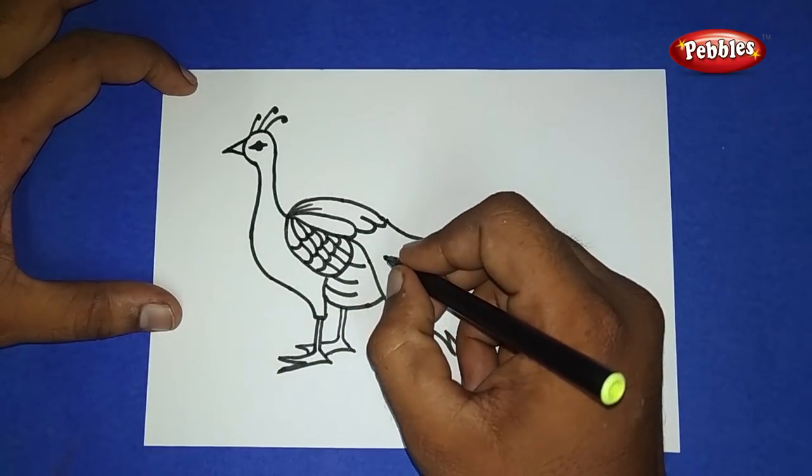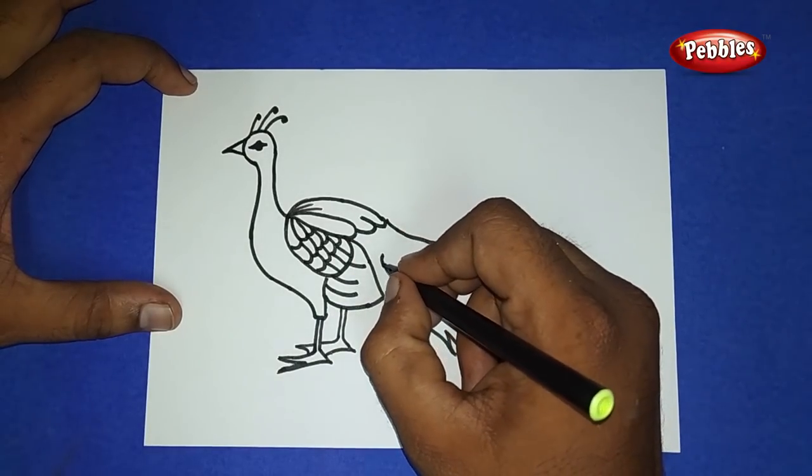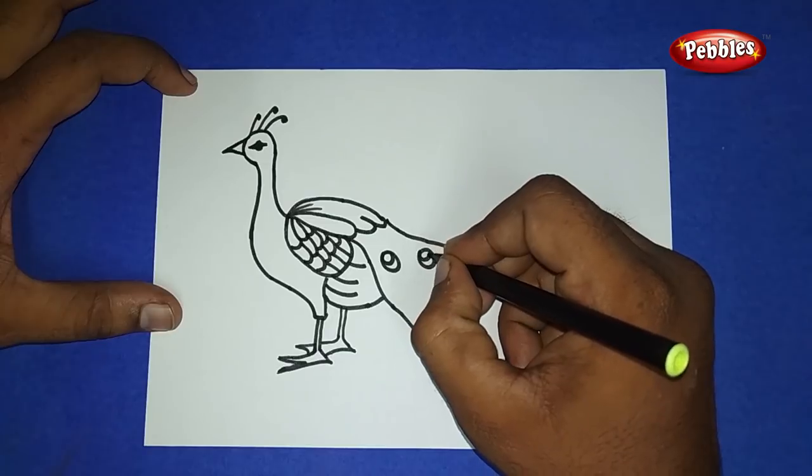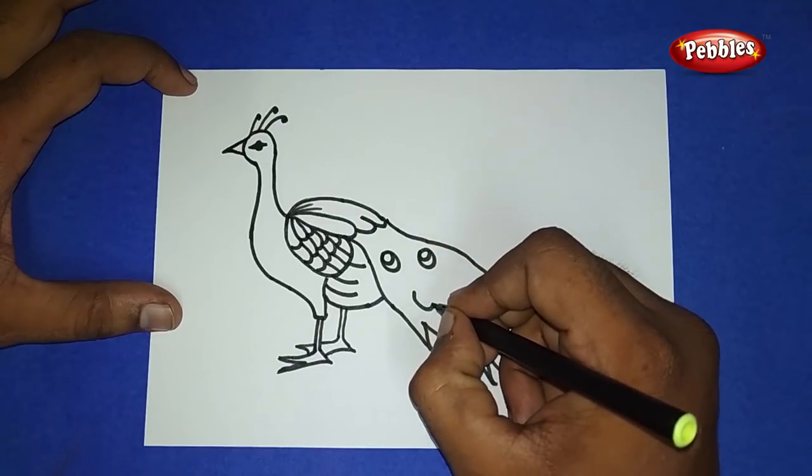And now inside a feather, draw a circle and have a cut inside. Draw this here and there by leaving some gap.